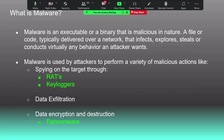Malware is an executable or binary that is malicious in nature — a file or code typically delivered over a network that infects, steals, or conducts virtually any behavior on the target. It is a very broad term. Malware is a software through which malicious code or scripts can be downloaded to another person so that personal credentials can be captured, or a reverse TCP connection can be established with the target system.